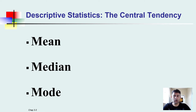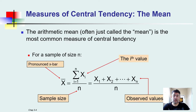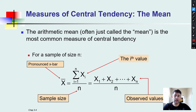As central tendency, we learn mean, median, and mode. These measurements are the most frequent and most important measurements in descriptive statistics. Let's start with the mean. The mean is the arithmetic mean. The arithmetic mean, often just called the mean, is the most common measure of central tendency. In this formula we have x-bar — pronounced as x-bar — which is the sample mean or arithmetic mean.